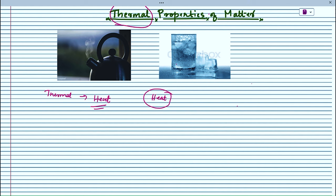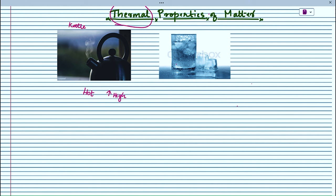First of all, look at the picture. We are having two systems here. One system is a hot system having a high temperature — that is a kettle with boiling water. The second picture shows a cold system, that is a low temperature system. We call the high temperature system the hotter system and the low temperature system the colder system.